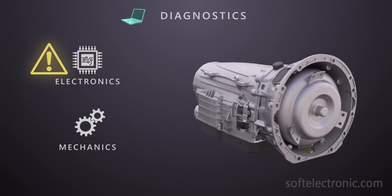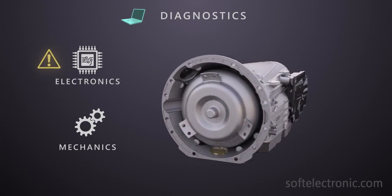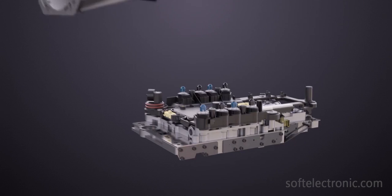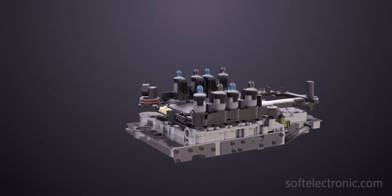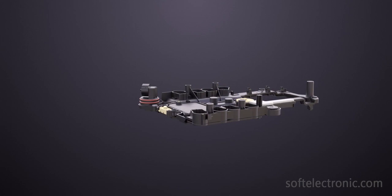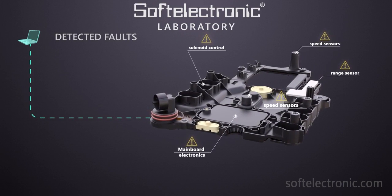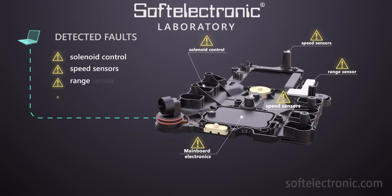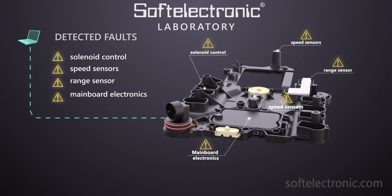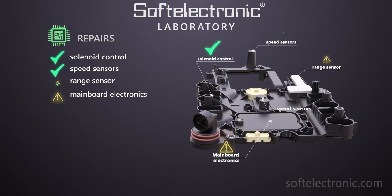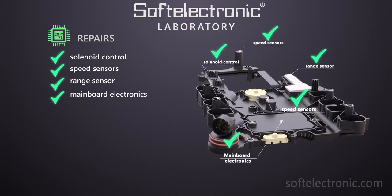If the automatic transmission is diagnosed with a problem in the electronics, the mechatronic must be dismantled from the gearbox and the control unit separated from the valve body. After that, it proceeds to the soft electronic laboratory where it's fully inspected. The client is informed on the status of the unit and the repair costs. Upon the client's approval, the necessary procedures are performed to have the mechatronic restored to its factory specifications.